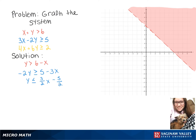So again, we're going to graph that line over here. This one is going to be a solid line because it's less than or equal to, and then we're going to shade everything below it.